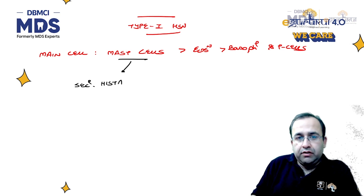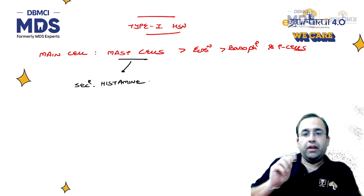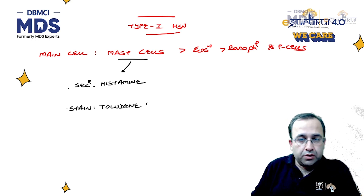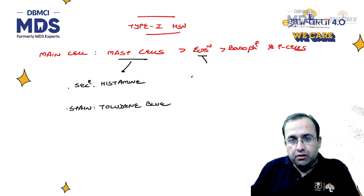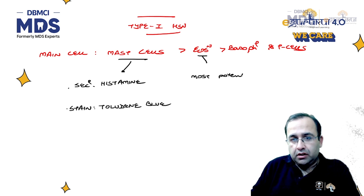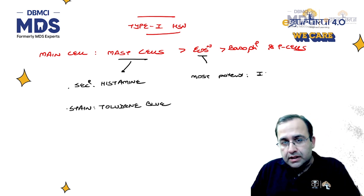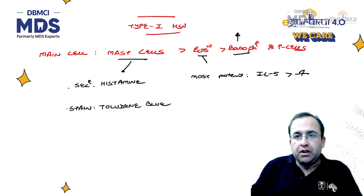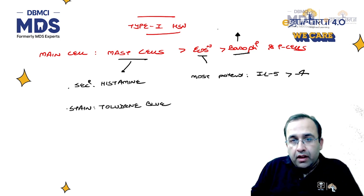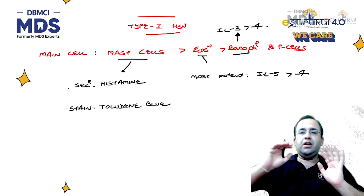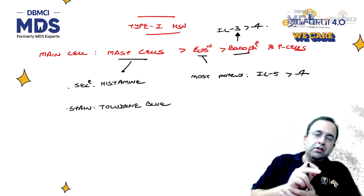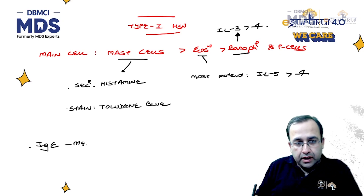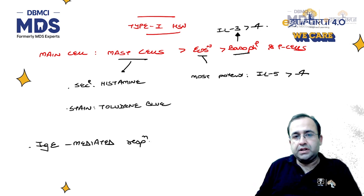The main mediator of type 1 hypersensitivity is histamine. The stain used for mast cells is toluidine blue. Most potent activator of eosinophils is interleukin-5, followed by interleukin-4. Versus most potent activator of basophils, which is interleukin-3, followed by interleukin-4. Type 1 hypersensitivity is an IgE-mediated response — that was what was asked in the question.